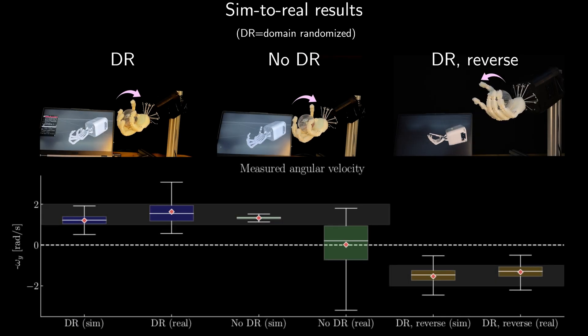To transfer our policies seamlessly to the real world, we domain randomize several factors, such as the size and density of the ball, and friction coefficients. With sufficient randomization, the trained controllers were able to rotate the sphere in both directions, while policies without randomization failed.